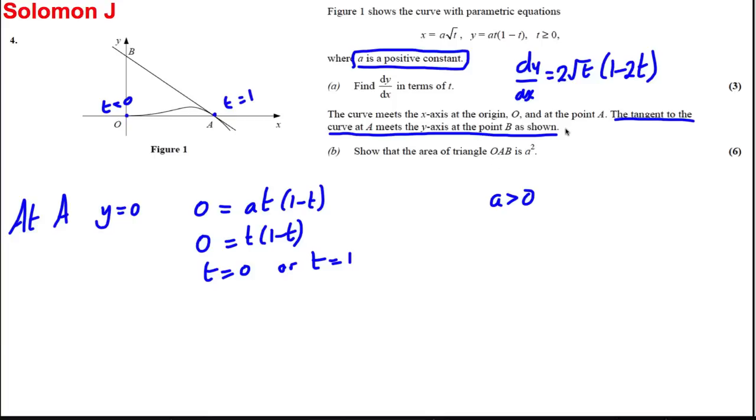Let's find the equation of the tangent. We know dy/dx, so what is dy/dx when t equals 1? It's 2√1(1 - 2×1), which is going to be 2 × -1, which is -2. So the gradient m is -2.